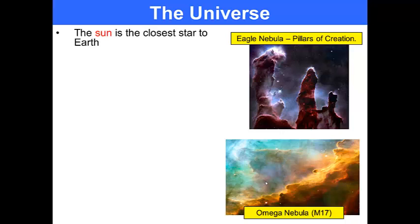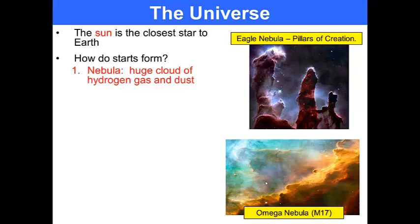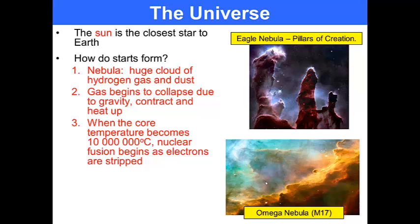The Sun is the closest star to the Earth. How do stars form? The first is a nebula, which is a huge cloud of hydrogen gas and dust. Gas begins to collapse due to gravity, it contracts and heats up. When the core temperature becomes 10 million degrees Celsius, nuclear fusion begins and electrons become stripped from atoms.